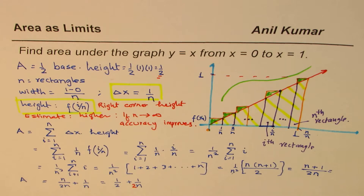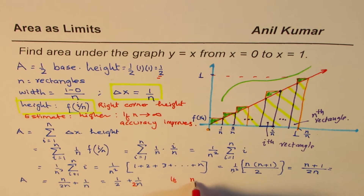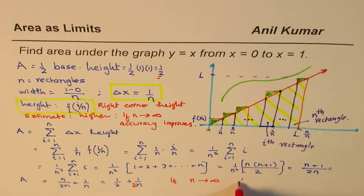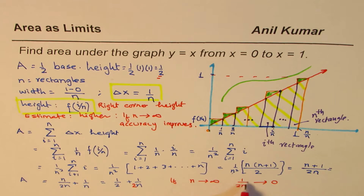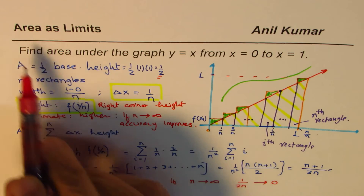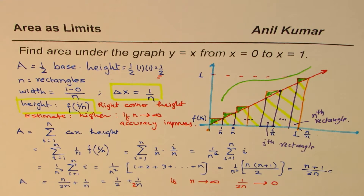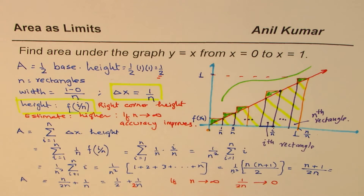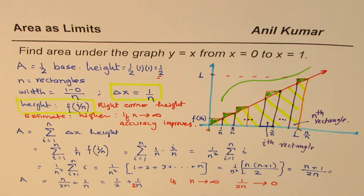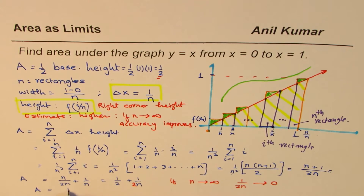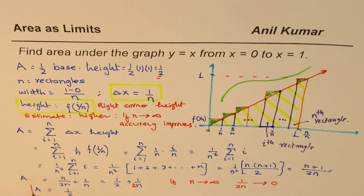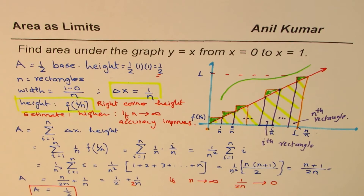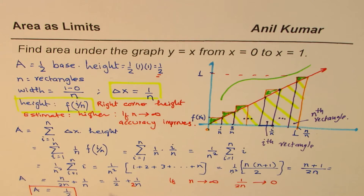If n is very large — say approaching infinity — then 1 over 2n approaches 0. So as n approaches infinity, the area approaches one half. That is the concept: as we increase the number of rectangles by a very large amount, the area actually approaches the actual area of one half, which is exactly the result we were expecting.